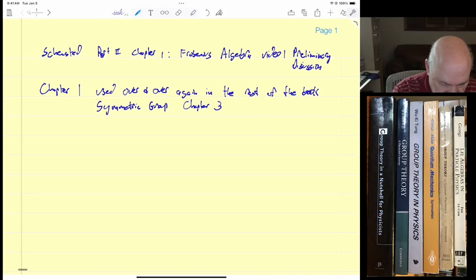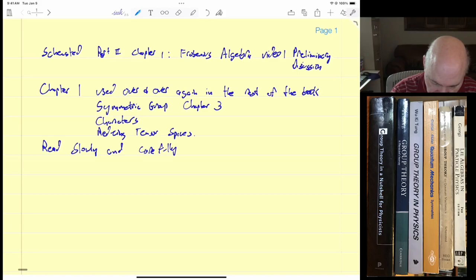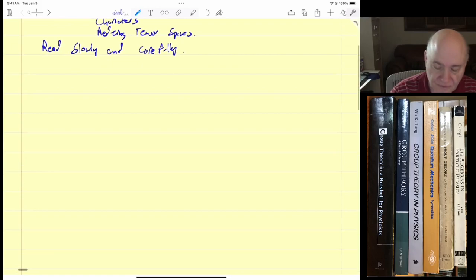We're going to have things like characters of the symmetric groups and reducing tensor spaces. Shinessted gives the advice to read slowly and carefully. Chapter 1 is like the core of the book.